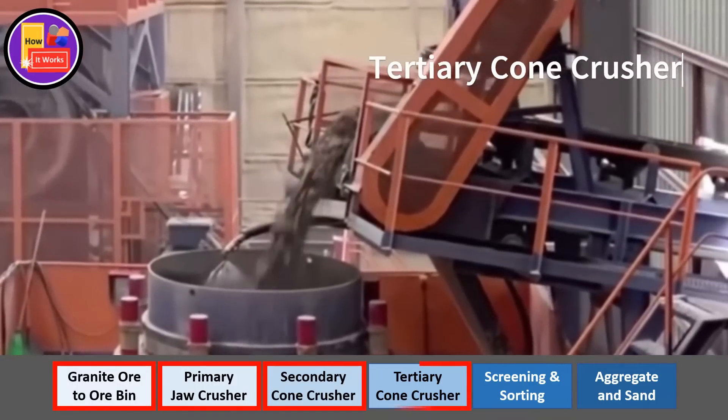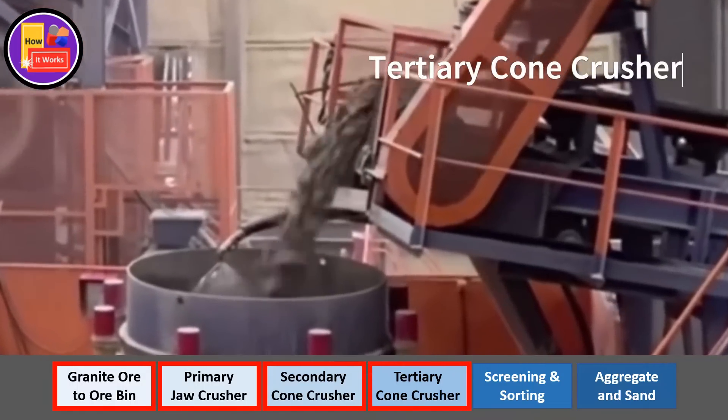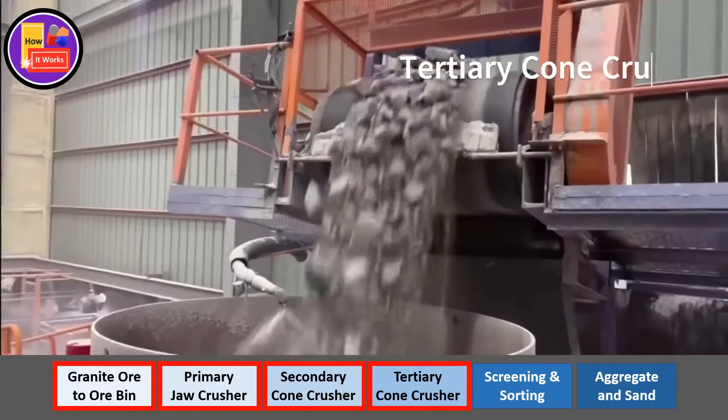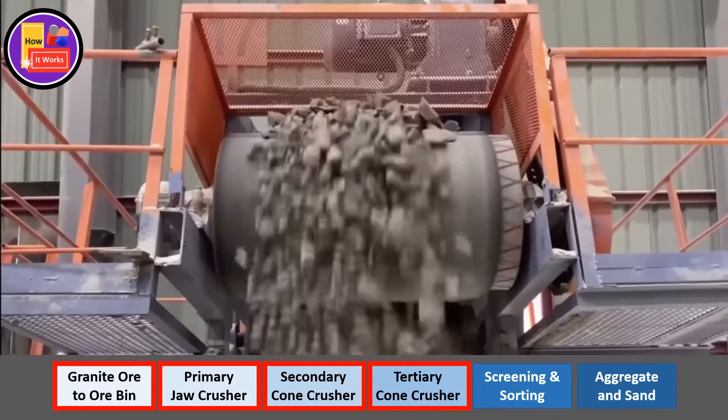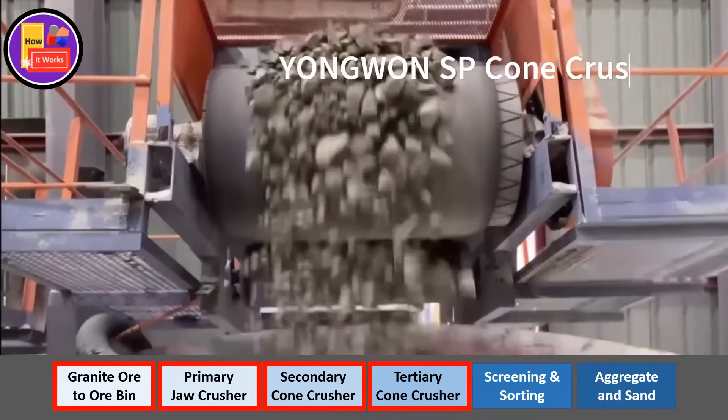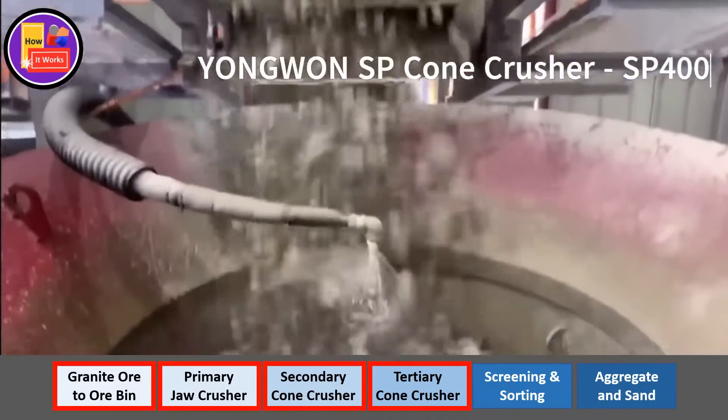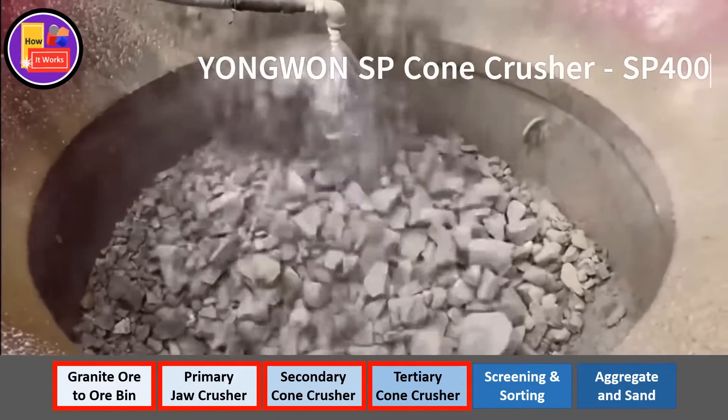Further, a small head comb crusher will be used as a tertiary crusher to reduce the smaller-sized stones to the final aggregate size.